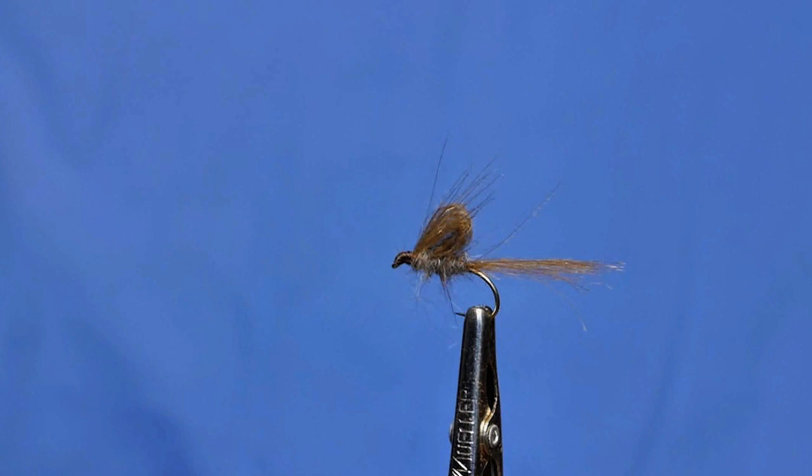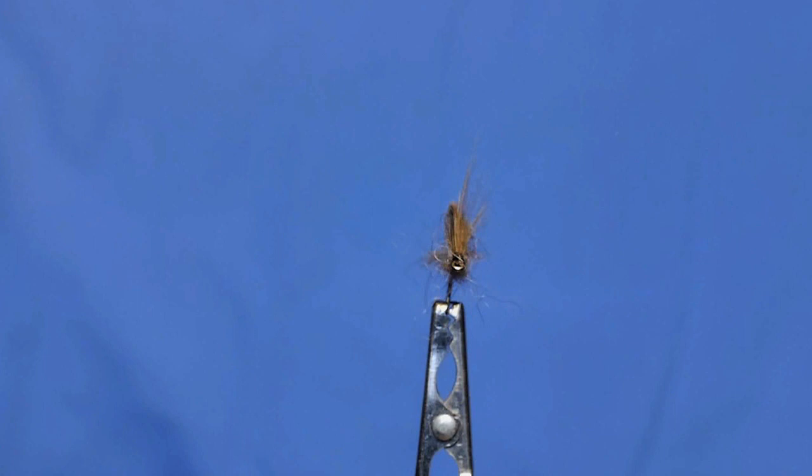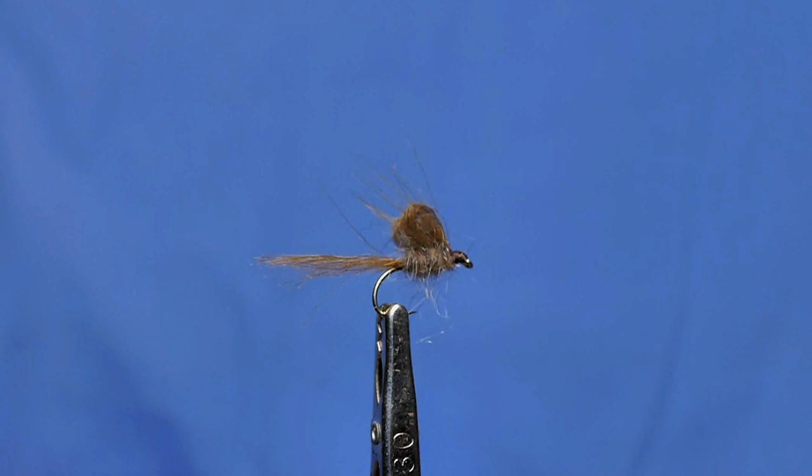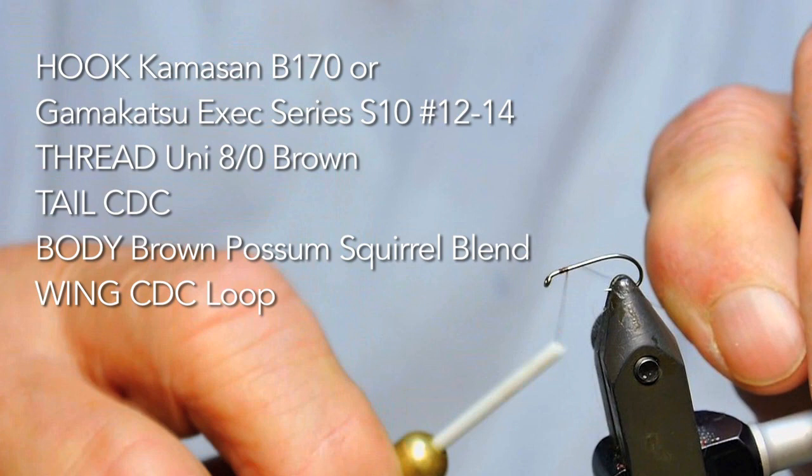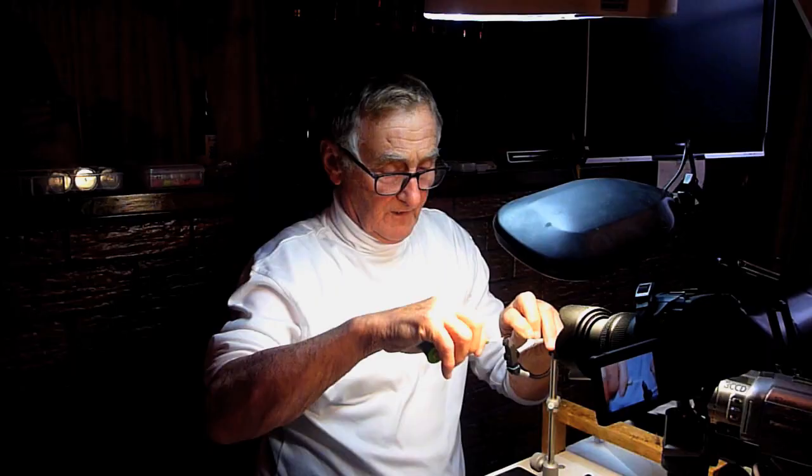Okay, CDC emerger. It's exactly the same as the possum emerger, only we're substituting the possum for CDC. A lot of people don't like it because it gets wet and gunky, but I love it. It's a good fish catcher and it floats well. We're using a B170 12.